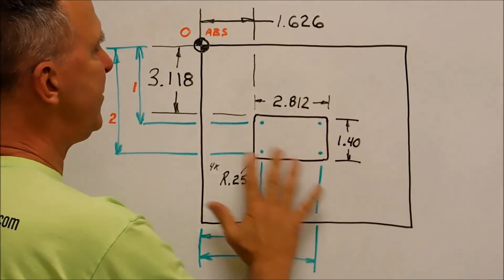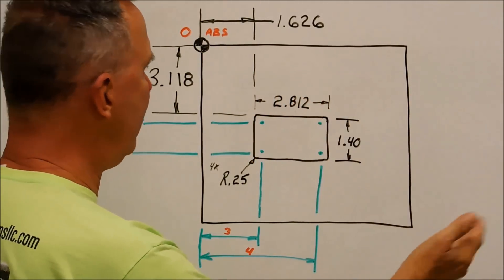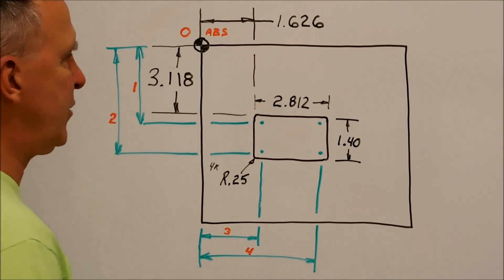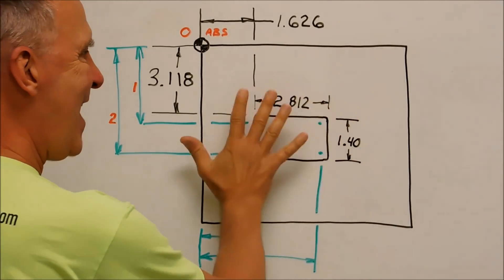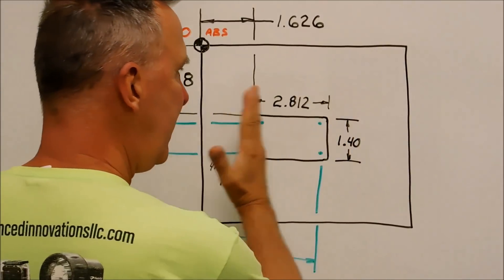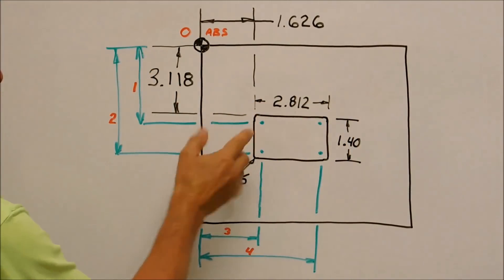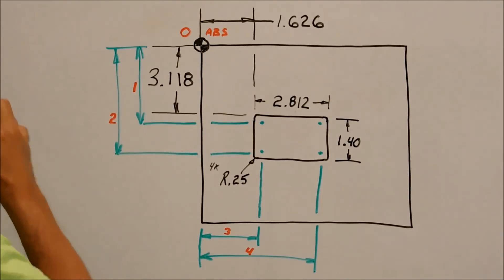Let's assume that this is a piece of aluminum, half-inch thick, six-by-six, and this pocket is not central to the plate — it is off location. So this is not a symmetrical square washer.